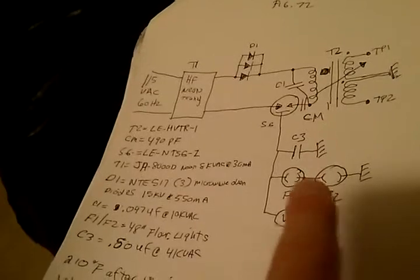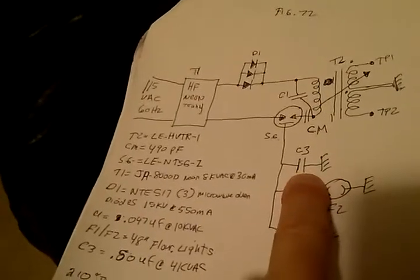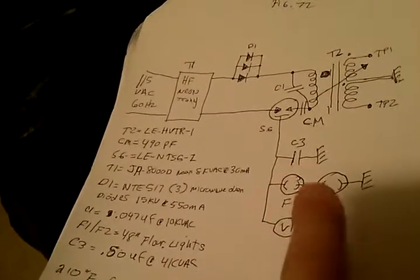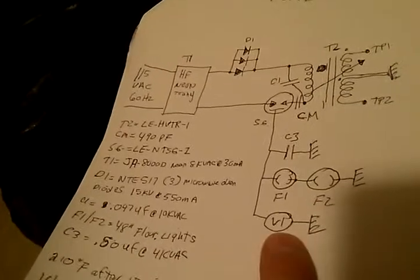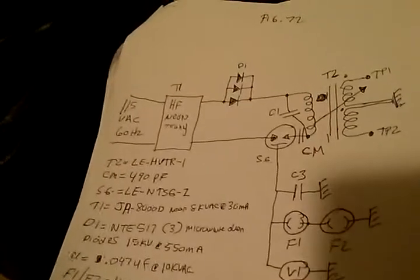You've got the fluorescent lights hooked up here. C3 helps the lights run. Analog volt meter down here which we've just seen.